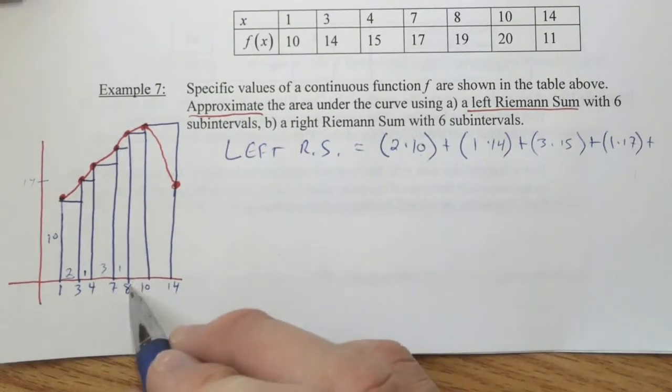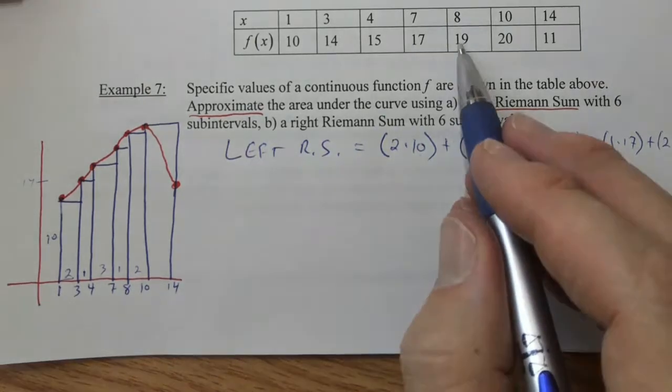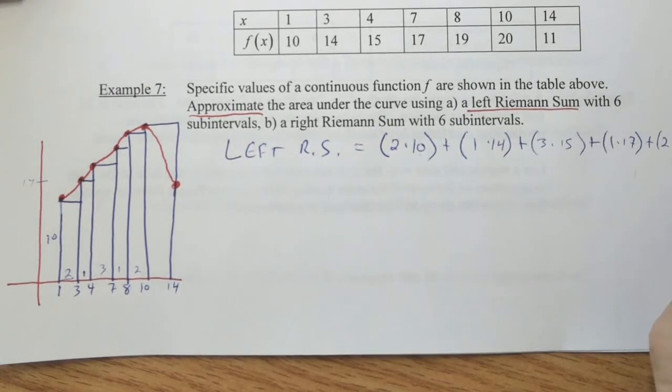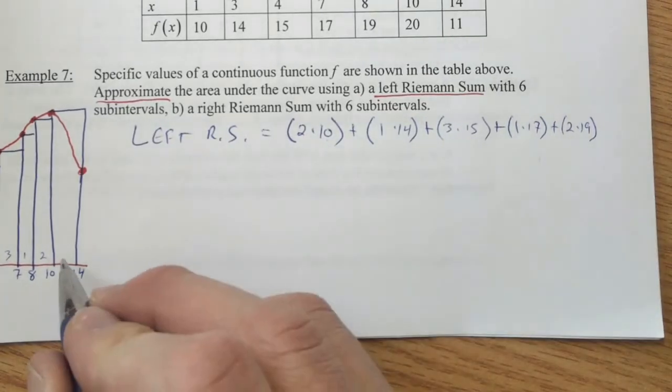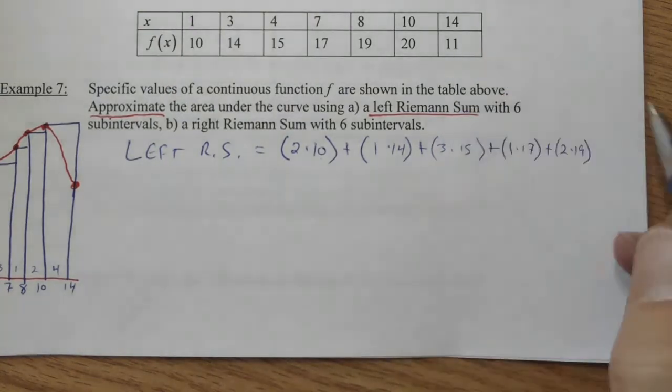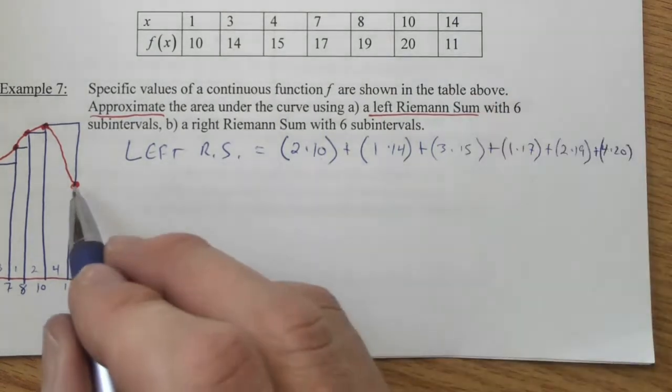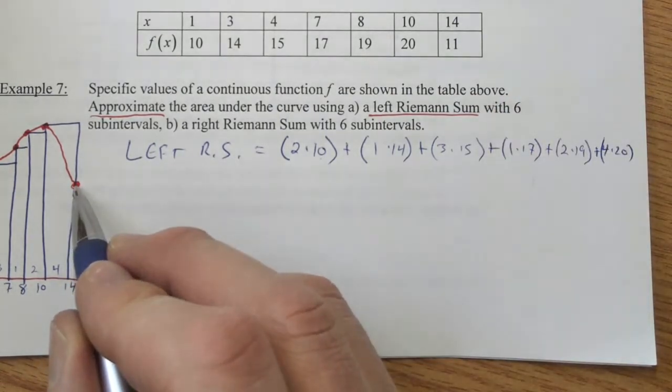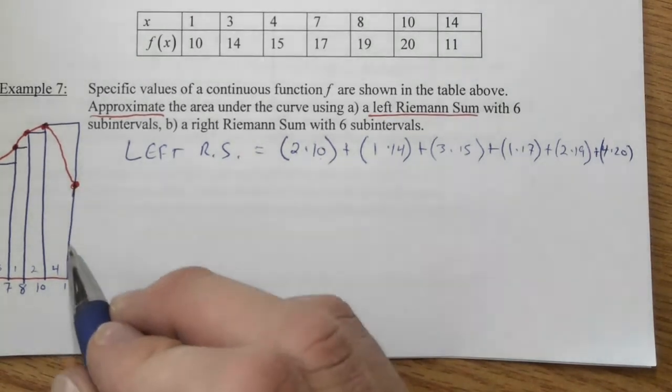Then we go from eight to ten, so our fifth rectangle, the base is two and the height will be nineteen. And then finally, our last base is four and our height is twenty. We don't end up using eleven. Here's the eleven right here, you can see that it's not part of the top border of any of the rectangles.